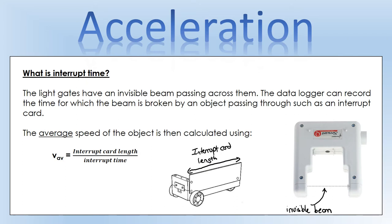The light gates have an invisible beam going across them, and the data logger records the time for which the beam is broken by an object passing through. The object we're using is called an interrupt card, which you can see on the side of the trolley. When the trolley passes through the light gate, this card breaks the beam and we measure how long it's breaking it for. The average speed is then calculated as the length of the card divided by the time of interruption.